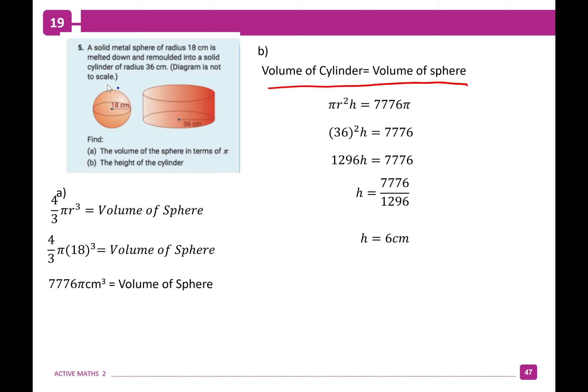When you're given two different shapes, you can equate the volumes. The volume will remain the same — you're just changing that volume into a different shape.